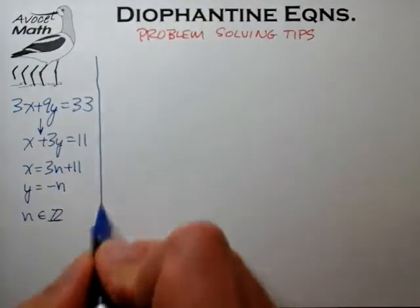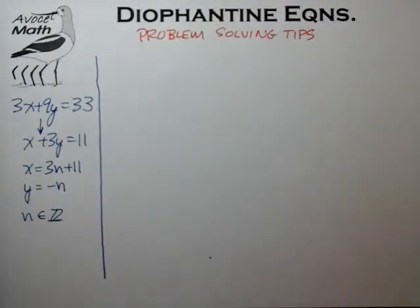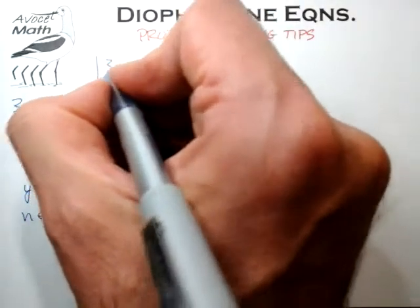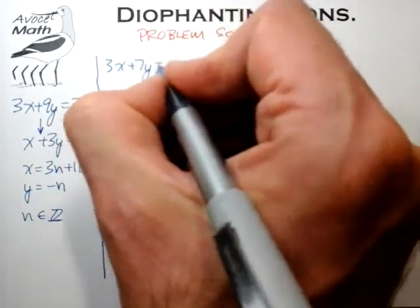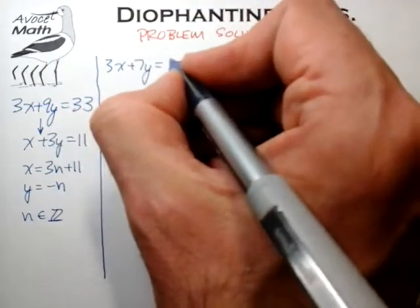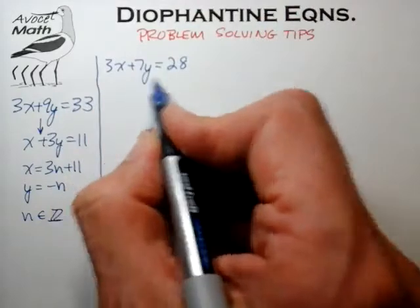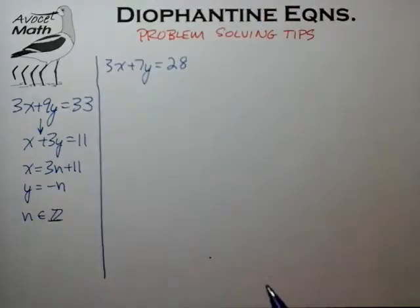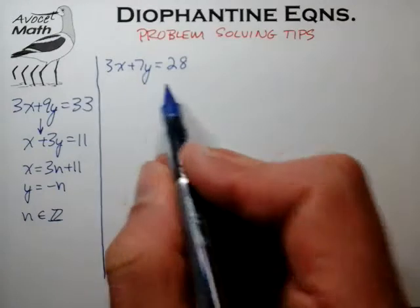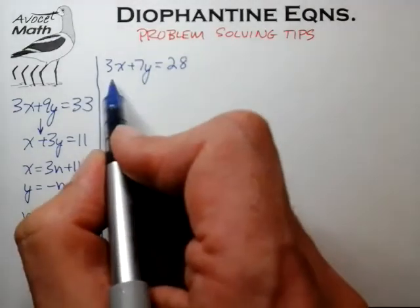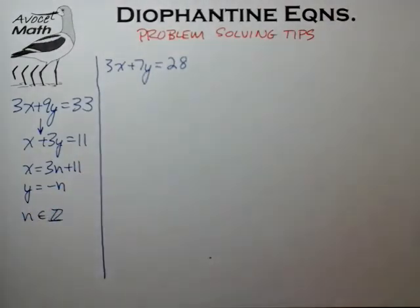The next tip relates to Diophantine equations where the coefficients are such that one of the coefficients divides evenly into the constant term. We can use the methods from the previous videos to attack this, but there is a shortcut for this type — and it's important because this simplified form is more likely to appear on an AMC-type exam.